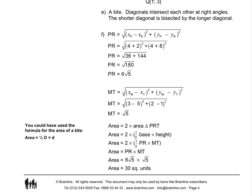For question 3E, we can conclude that we have a kite, because the diagonals intersect each other at right angles and the shorter diagonal is bisected by the longer diagonal.